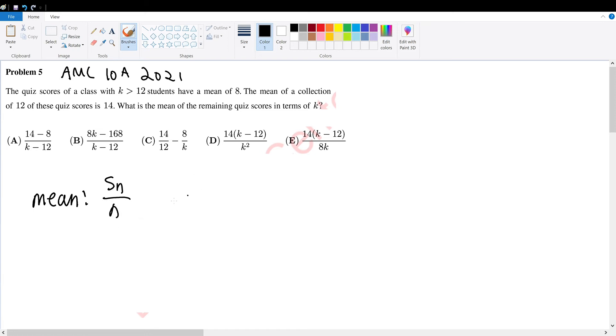Well, we're trying to find the mean for k is greater than 12. So to find this, we need to find the sum of the first k terms minus the sum of the first 12 terms over k minus 12. This will give us the mean of the remaining quiz scores other than the first 12.